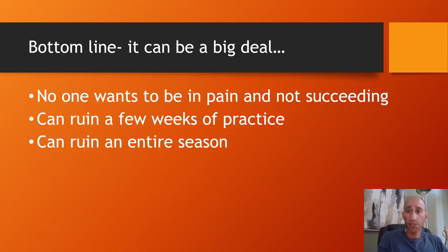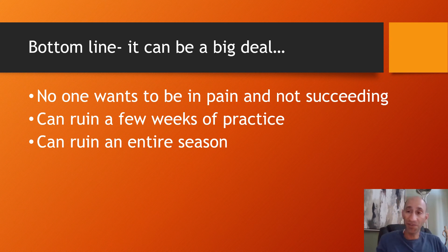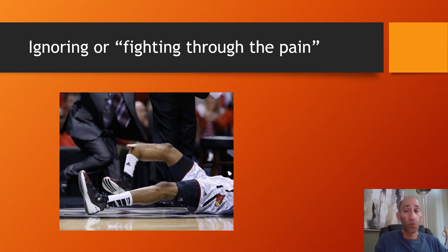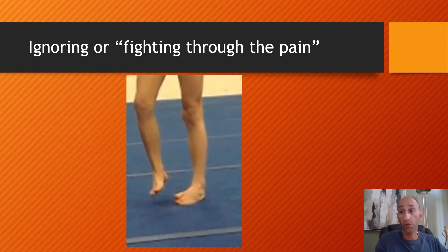The bottom line is shin splints can be a couple of weeks of nuisance with suboptimal practice, whereas a stress fracture can be a big deal — even the end of an entire season — and rarely an emergency. The next slide is gruesome, so if it's going to bother you, look away. Rarely, a stress fracture can become an emergency. This open fracture may have occurred because an athlete fought through the pain of a stress fracture, and finally with enough torque or impact, the stress fracture couldn't hold on anymore.